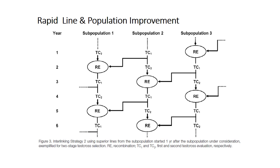This is how rapid line and population improvement is done using double haploid technology in different subpopulations. Here an interlinking strategy uses superior lines from a subpopulation started one year after the subpopulation under consideration, exemplified for two-stage test cross selection. TC1 and TC2 are first and second test cross evaluation, and RE is recombination.